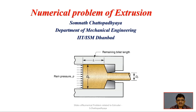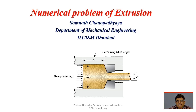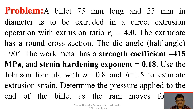In the front slide, a typical extrusion process is shown. The ram pressure is provided, the initial diameter is D₀, L is the remaining billet length that will be converted to the final product, and D_F is the final diameter of the extruded product coming out of the die. The problem is as follows: